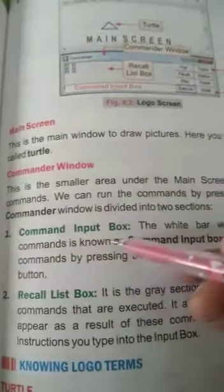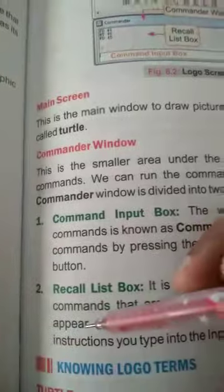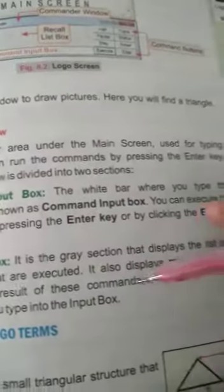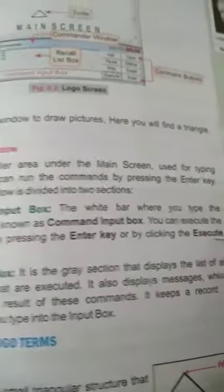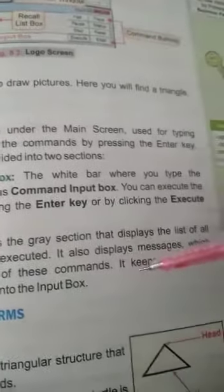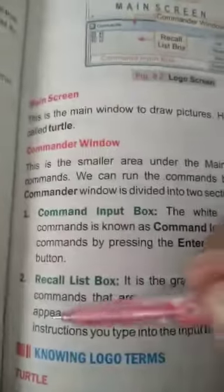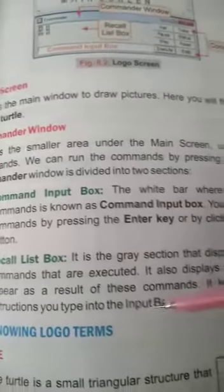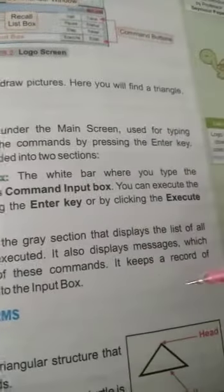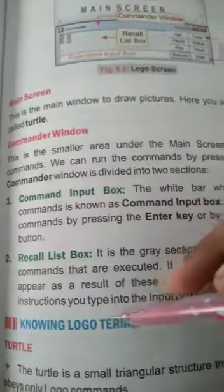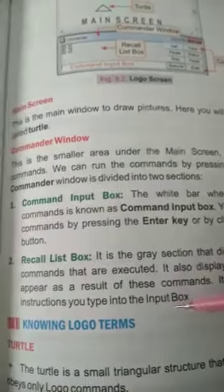Recall list box: It is the gray section that displays the list of all commands that are executed. It also displays messages which appear as a result of these commands. It keeps a record of instructions you type into the input box.